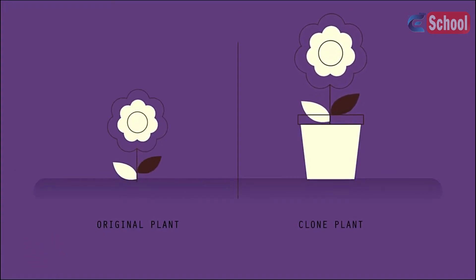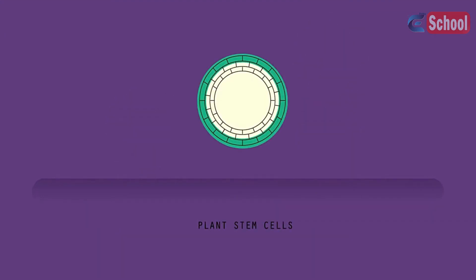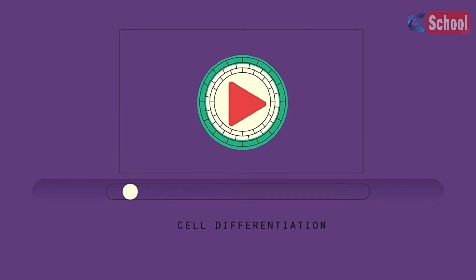This method works because the shoots of the plant contain stem cells, which are able to differentiate to form different cells and tissues. You can find out more about this process by watching this video.